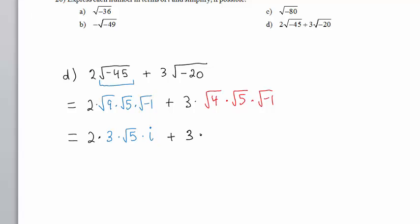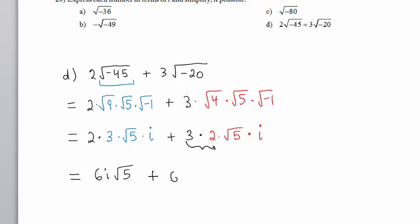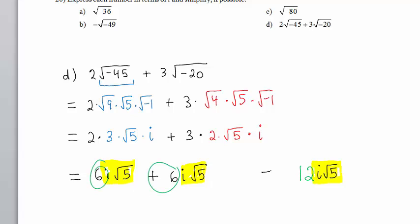We have 2 times 3 times the square root of 5 times i, plus 3 times 2 times the square root of 5 times i. That gives us 6i√5 plus 6i√5. These are like terms because they both involve factors of i√5. Adding 6 plus 6 gives us 12, so our final answer is 12i√5.